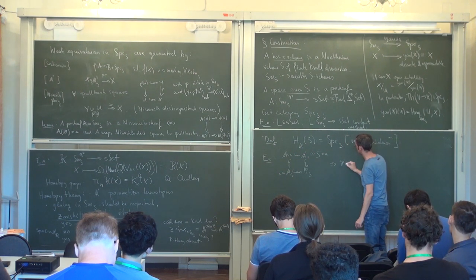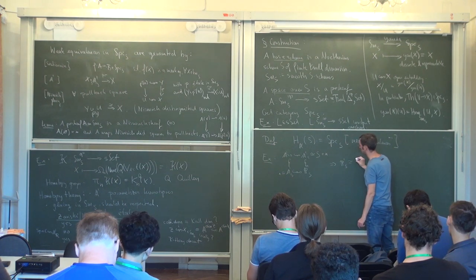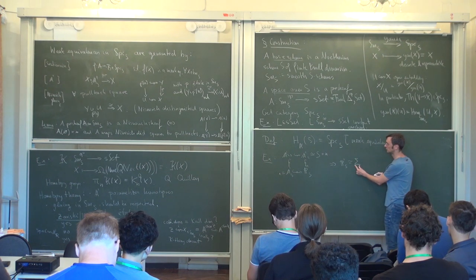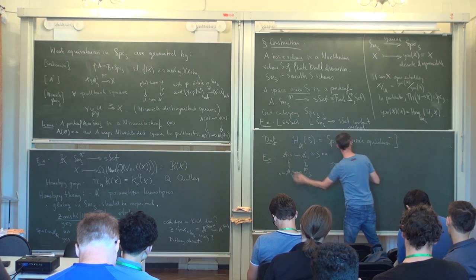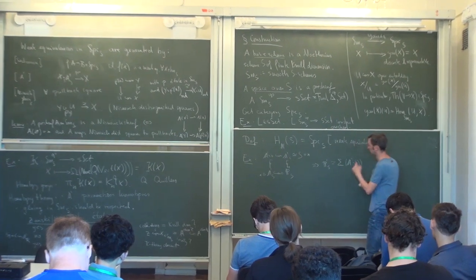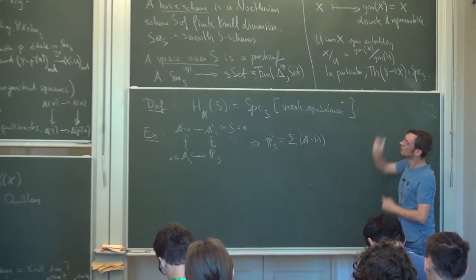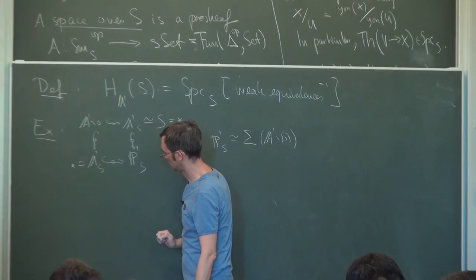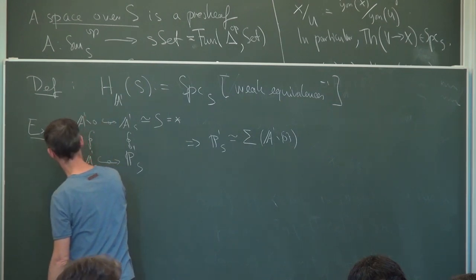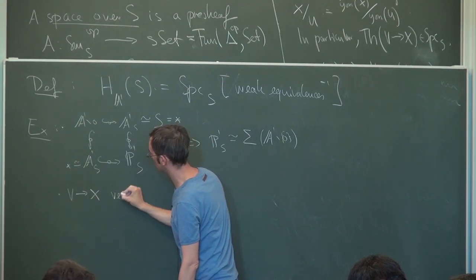So what we get from this is that the projective line over S is the simplicial suspension, which is usually denoted Σ like this, of this term here. And one can go further.